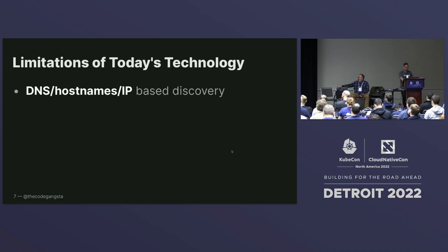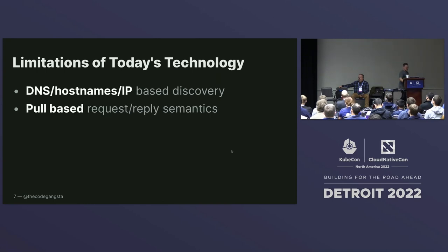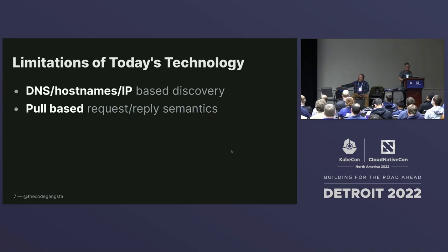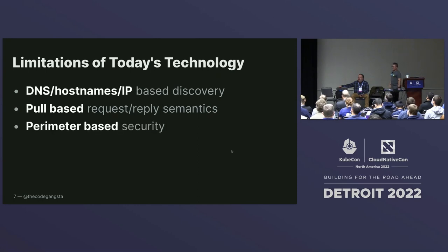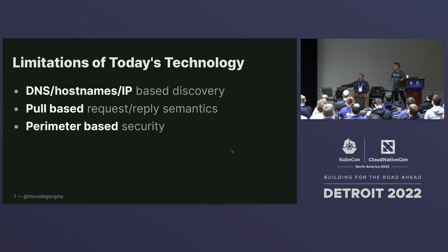Some of the limitations of today's technology: we use DNS and hostnames and IP to discover machines, and because of that we have kind of these one-to-one communication patterns. And for the most part, if we're using things like HTTP, we're doing this poll-based request and reply semantics. Sure, we have some other technologies that are doing some streaming and some push, but it's more layers on top of the same thing. We've also adopted this kind of perimeter-based security — just throw all your stuff in a VPC and everything will be okay. But many of us have learned that there are new problems that come with that, especially when you've got to go outside the scope of your VPC.